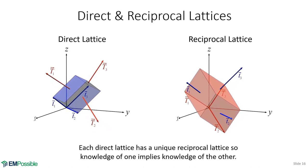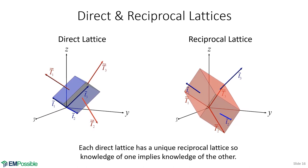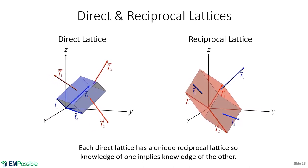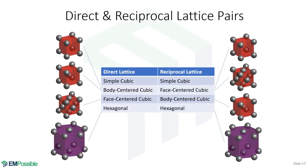All the properties that apply to a direct lattice apply to the reciprocal lattice as well. They are unique pairs — a direct lattice has only one reciprocal lattice, and that reciprocal lattice always takes us back to the same direct lattice. Here are some common direct-reciprocal lattice pairs: simple cubic stays simple cubic; body-centered cubic has a reciprocal lattice that is face-centered cubic; face-centered cubic has body-centered cubic symmetry in reciprocal space; and hexagonal remains hexagonal.